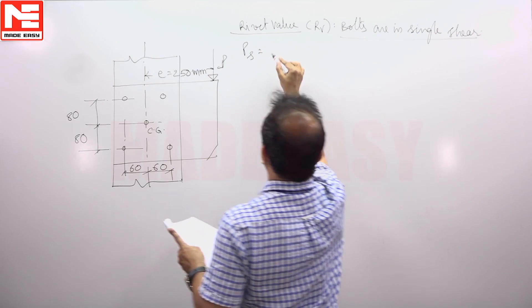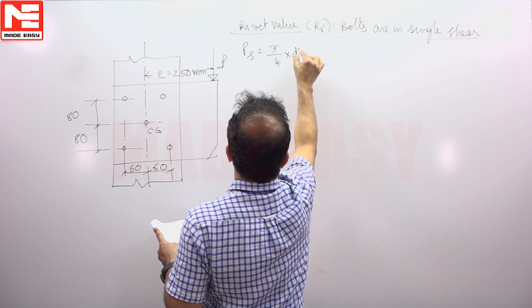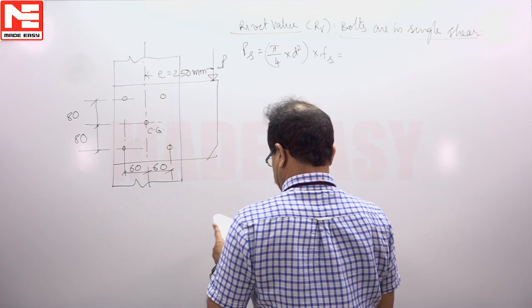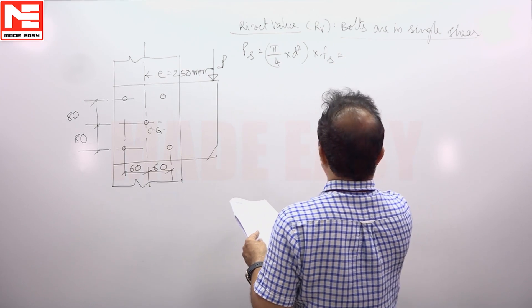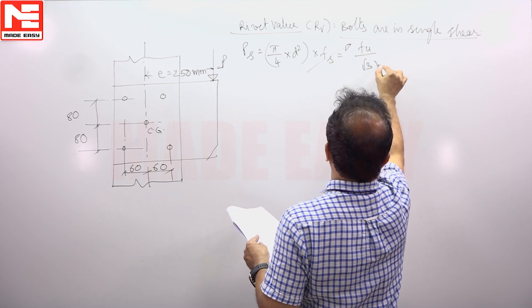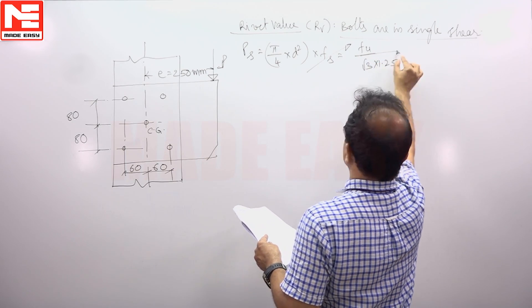So Ps will be π/4 × D² × Fs, the permissible shear stress. Now this Fs value is Fu/(√3 × 1.25).